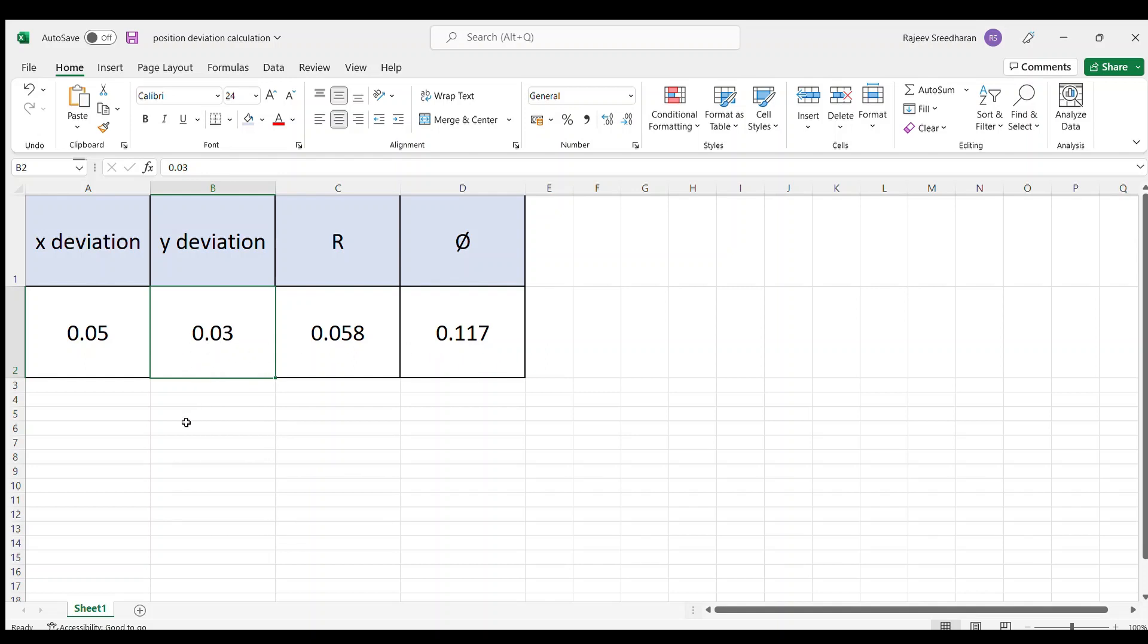Now, if I take 0.05 in y, so that means both the axis having same deviation, 0.05 and 0.05, the result is 0.14.